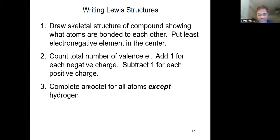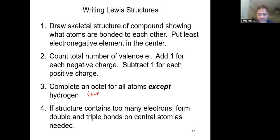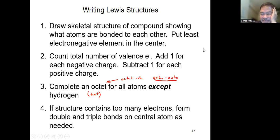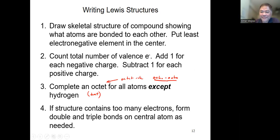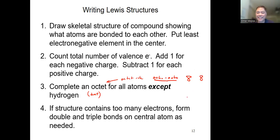Hydrogen only needs a duet — just two electrons. The octet rule states that atoms need eight valence electrons, like noble gases. Why eight? Because eight is the number of valence electrons in noble gases, and noble gases are stable — they don't react with other elements.